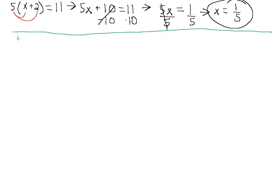Let's move on to the next one. We have 1 half times the expression (3z minus 1), and this equals minus 3 eighths. Once again, we have our variable buried inside the parentheses, so we want to extract it. Using the distributive property, we're going to multiply each term in the expression by 1 half. Doing so gives us 1 half times 3z, which is 3 halves z.